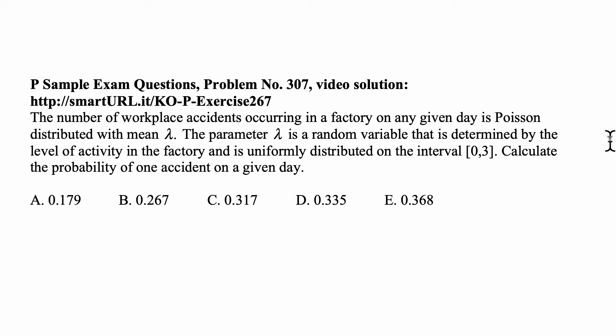The number of workplace accidents occurring in a factory on any given day is Poisson distributed with mean lambda. The parameter lambda is a random variable that is determined by the level of activity in the factory and is uniformly distributed on the interval [0,3]. Calculate the probability of one accident on a given day.